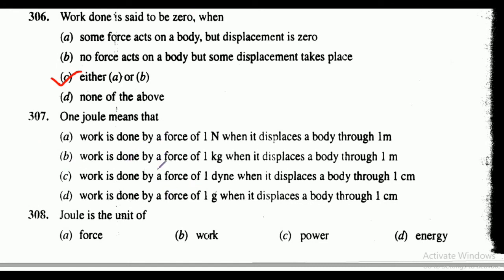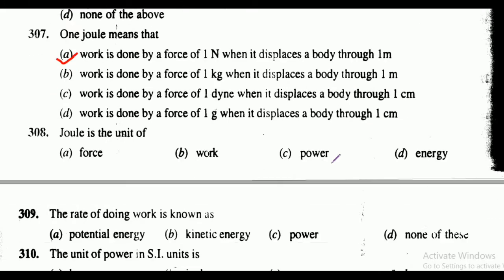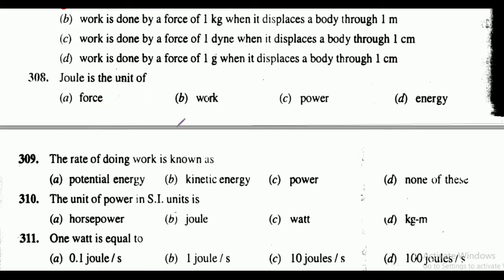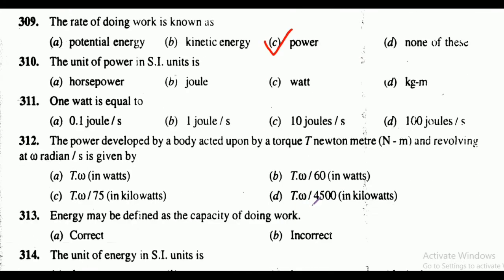Question 307: one joule means — the correct answer is option A, work done by a force of one newton when it displaces a body through one meter. Question 308: one joule is the unit of work. Question 309: the rate of doing work is known as — the correct answer is option C, that is power. Question 310: the unit of power in SI units — the correct answer is option C, that is watt.